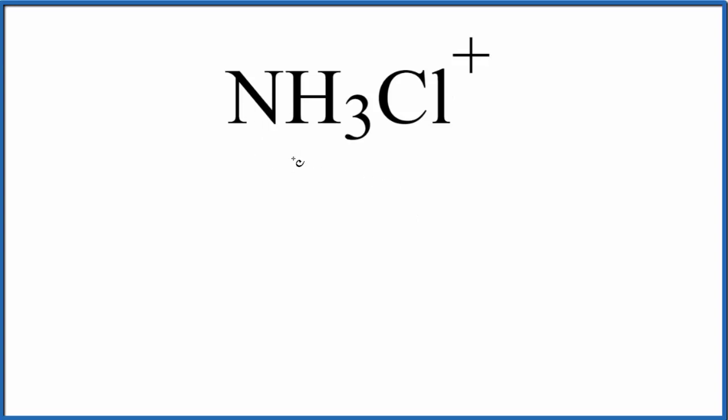First let's count the valence electrons up. Nitrogen has 5 plus 1 for hydrogen, 3 hydrogens, plus chlorine, 7. And this positive sign, that means we've lost an electron. We've become more positive. So we're going to subtract one electron, and if you add these up, 8 plus 7, 15, minus 1, 14 total valence electrons for NH3Cl+.